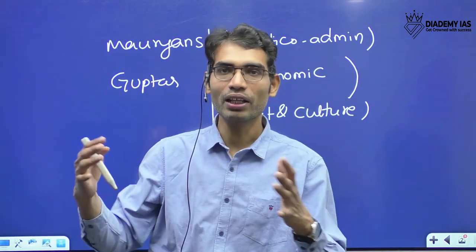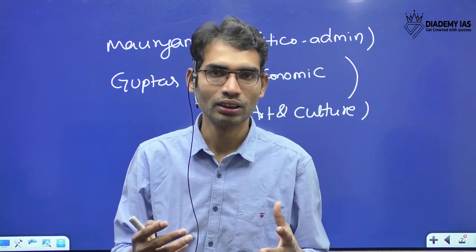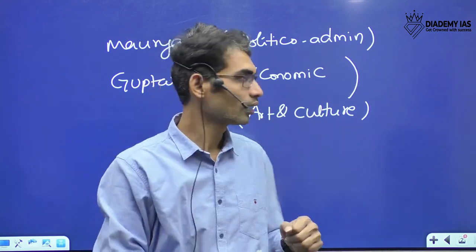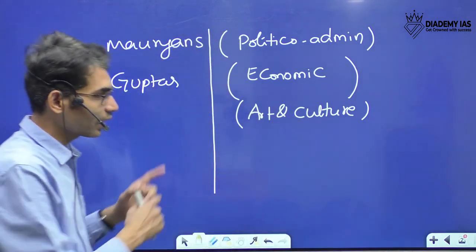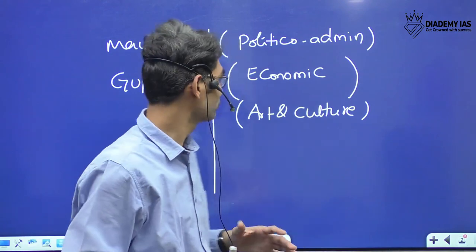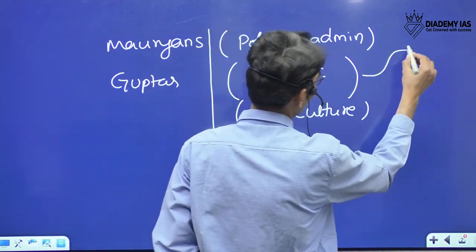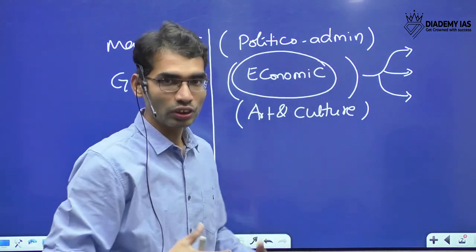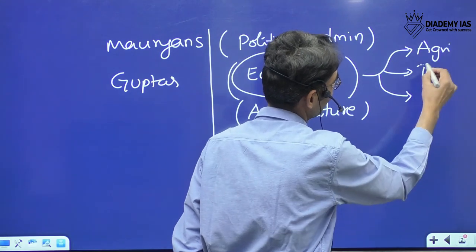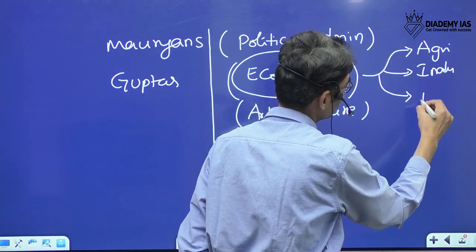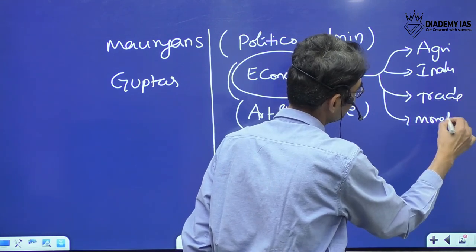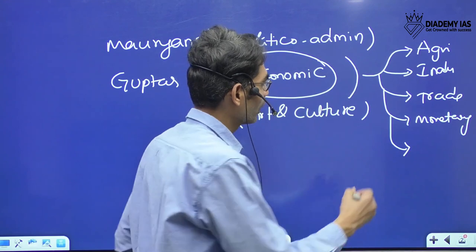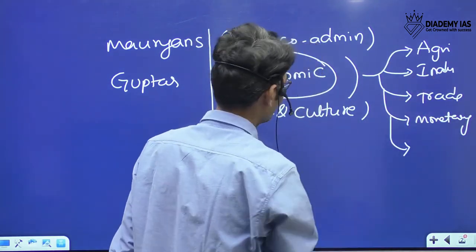When it comes to early medieval history, major aspects like the Bhakti movement and feudalism are very crucial for that time period. We will club all those questions under one group. In economy, one particular question can cover a complete economic dimension — you need to talk about agriculture, industrial conditions, trade, monetary aspects, and international relations.